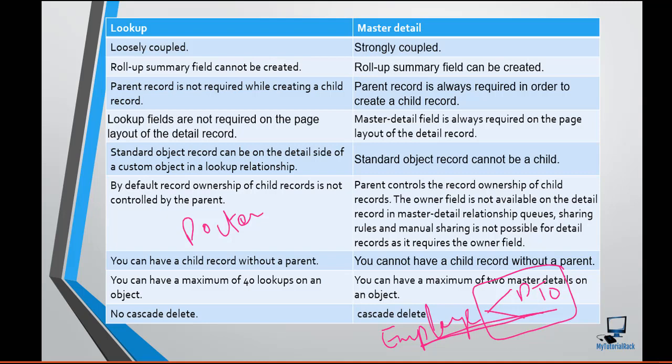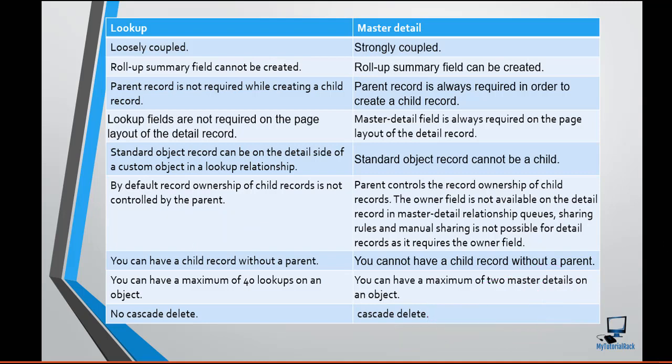Another important point: you can have a maximum of 40 lookup relationships on an object. This number was 25 earlier, but after the Summer '16 release they increased it to 40. So you can have a total of 40 lookup relationships on an object, whereas you can have a maximum of only two master-detail relationships on an object.